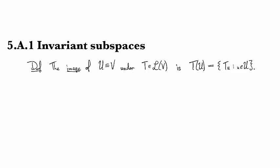Just to distinguish here, the range of T is T of the entire vector space V, but U can be smaller. And so that's what distinguishes it from the range, as we've seen before.